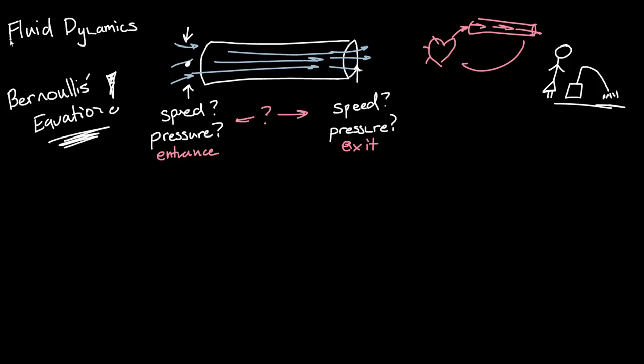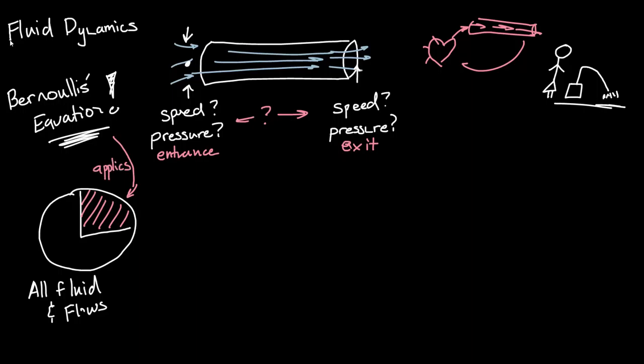So the first thing you want to know is that, I'm just going to draw a circle here. This circle is all fluids and flows. So of all the types of fluids and all the types of ways they could be moving, that's everything. And this here is where Bernoulli's equation applies. It doesn't actually apply everywhere, it doesn't apply for all fluids, but it applies for a significant portion of them, and for that portion, it's really convenient to use.